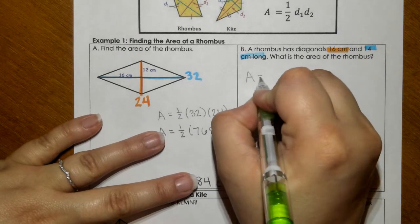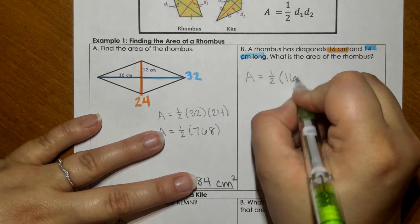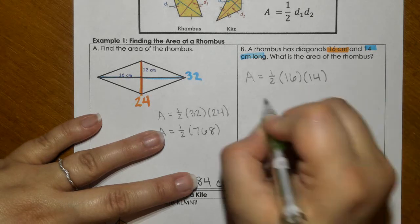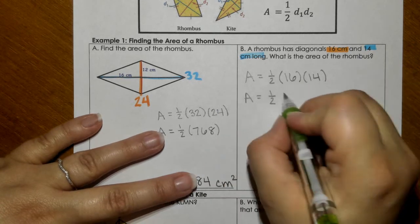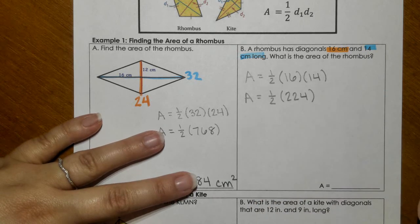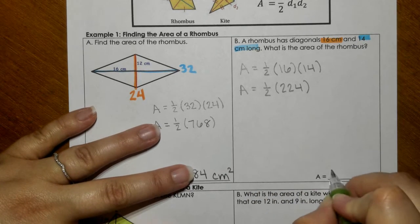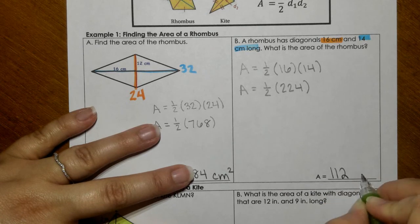So 16 times 14. If I multiply that together, we get 224. And if we divide that, we get 112, and this would be centimeters squared.